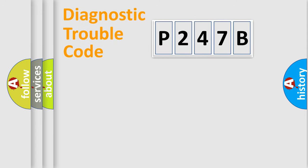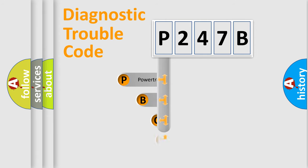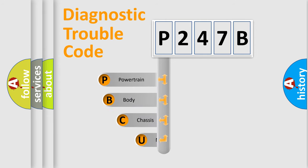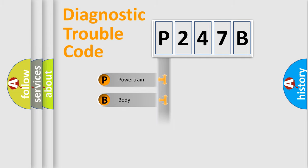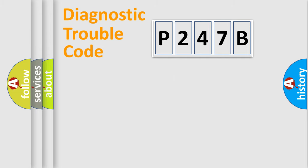Let's look at the history of diagnostic fault code composition according to the OBD2 protocol, which is unified for all automakers since 2000. We divide the electrical system of an automobile into four basic units: powertrain, body, chassis, and network.